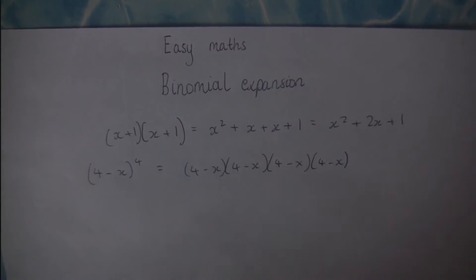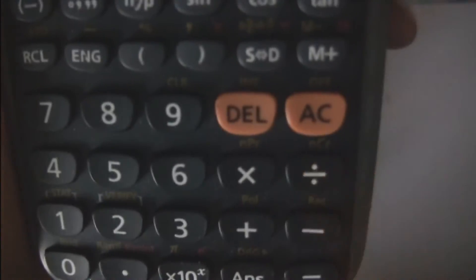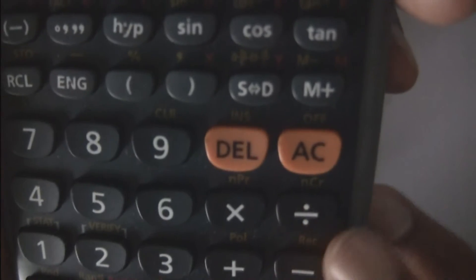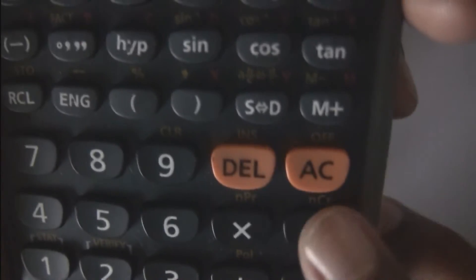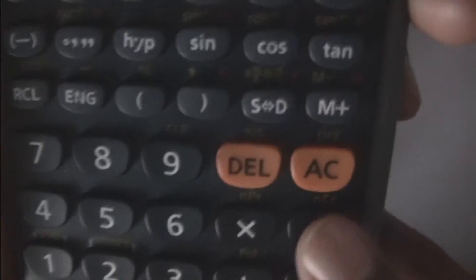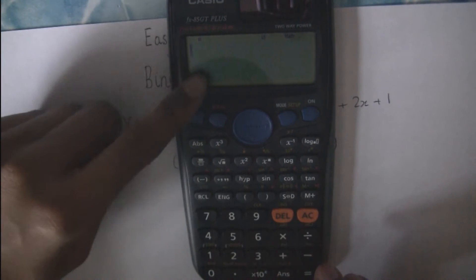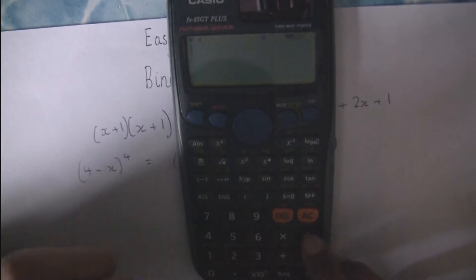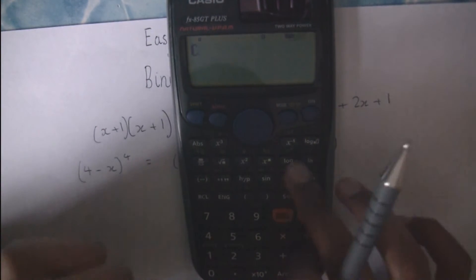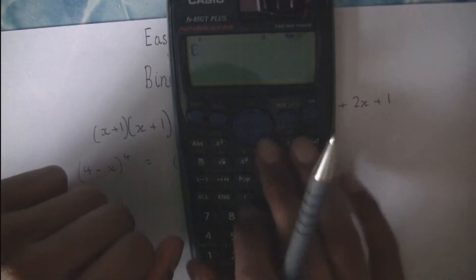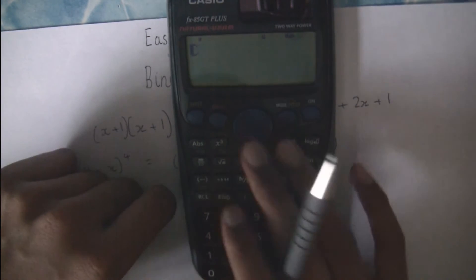One of the key things you'll need is a specific button on the calculator. There's a button that says NCR just above the divide button. On this calculator, if you press shift and then the divide button, you'll get a C that comes on the screen. This is what you'll need in Binomial Expansion.